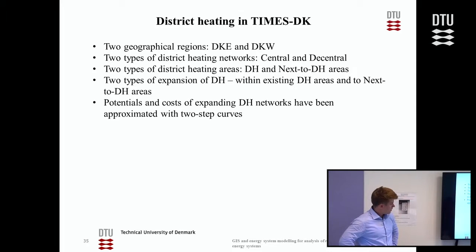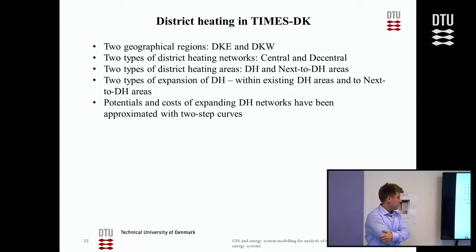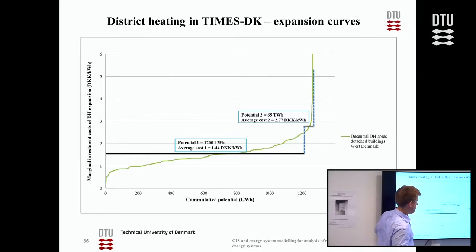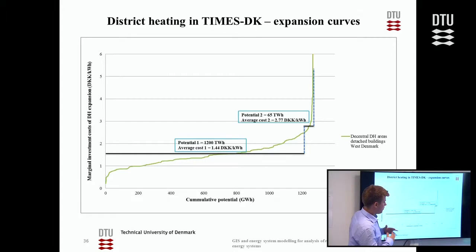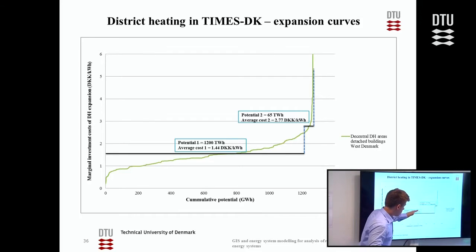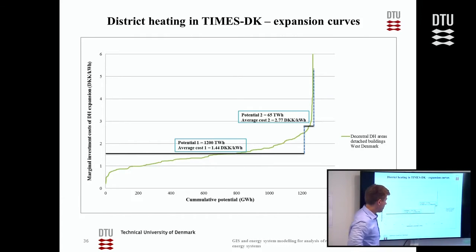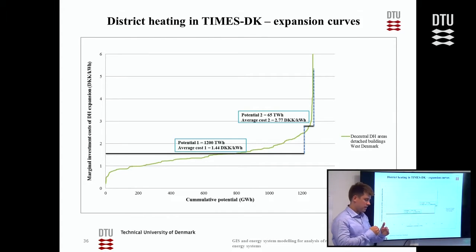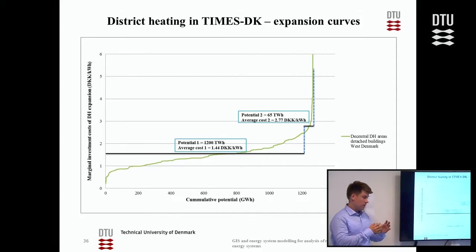We have two types of expansion potentials: within existing district heating areas and in next-to district heating areas. All potentials and costs are approximated with two-step curves, similar to heat savings. This curve describes the connection cost for central district heating areas in West Denmark. Instead of fitting a very complicated multi-step curve, two potentials and costs are fed into TIMES-DK, which can then decide whether to connect these buildings — is it optimal for society to connect these buildings to district heating or not? Lifetimes and investment costs are different for distribution pipes, connecting pipes, and heat exchangers.